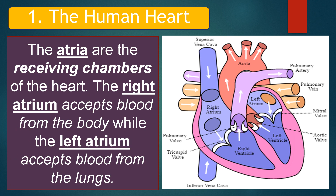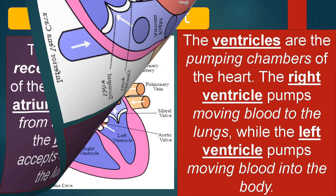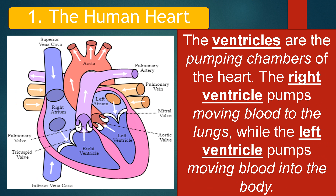The atria are the receiving chambers of the heart. The right atrium accepts blood from the body, while the left atrium accepts blood from the lungs. The ventricles are the pumping chambers of the heart. The right ventricle pumps moving blood to the lungs, while the left ventricle pumps moving blood into the body.